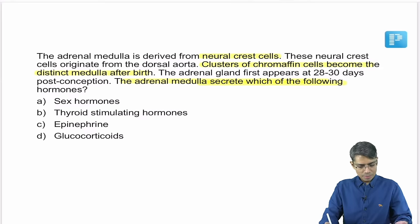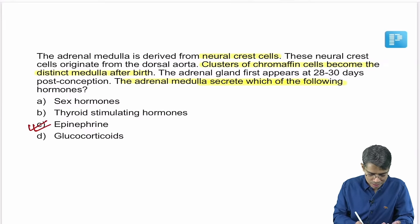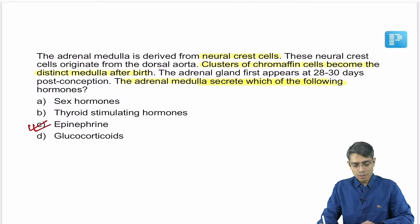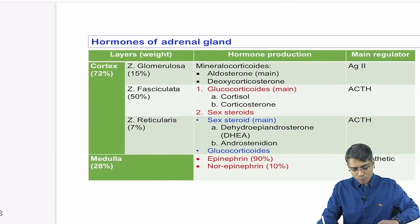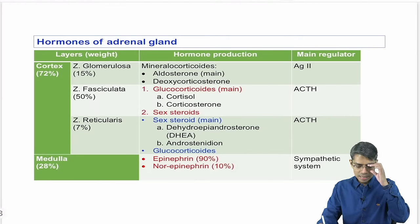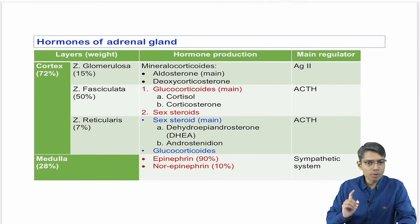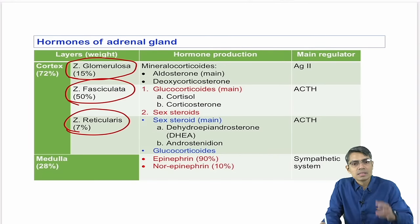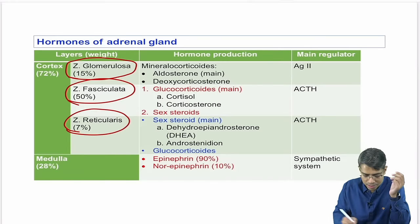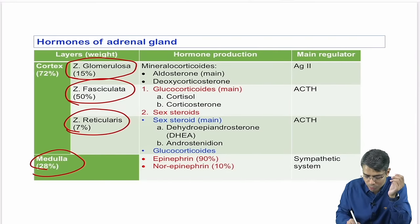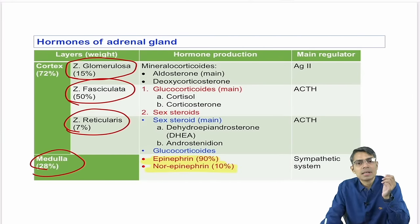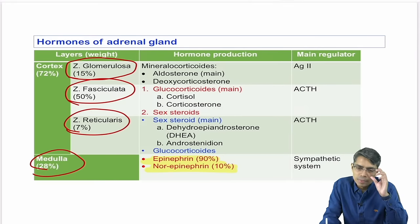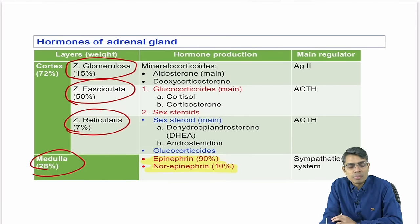Adrenal medulla secretes epinephrine and norepinephrine. Epinephrine is the maximum — approximately 90% epinephrine and 10% norepinephrine. The three layers of the adrenal cortex are: zona glomerulosa, zona fasciculata, and zona reticularis, plus the adrenal medulla.